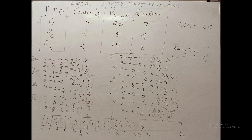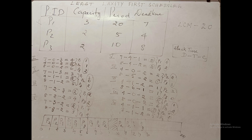P2's capacity is 2, so we allocate CPU to P2 for 1 second, leaving remaining time of 1. At the second iteration with T=1, we recalculate slack times and P2 again has the least slack time. After executing for another unit, P2's remaining time becomes 0 and it completes its execution within the first interval (0 to 5). Now only P1 and P3 remain in the ready queue.